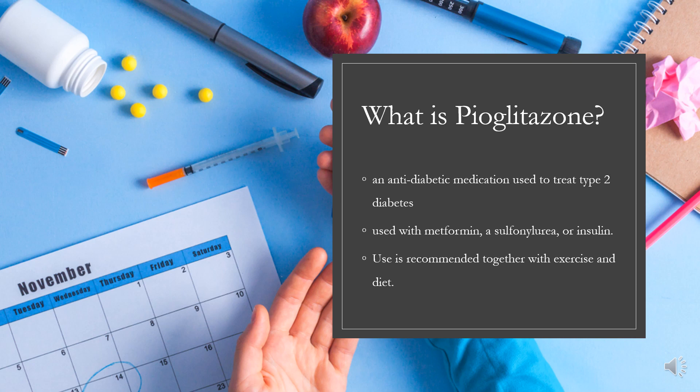Pyoglitazone was patented in 1985 and came into medical use in 1999. It is available as a generic medication. In 2020, it was the 168th most commonly prescribed medication in the United States, with more than 3 million prescriptions. It was withdrawn in France and Germany in 2011.